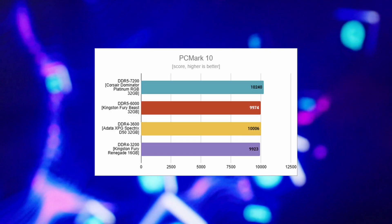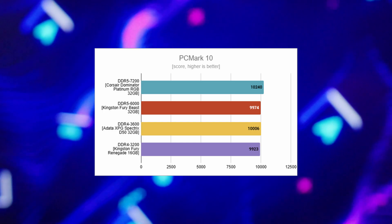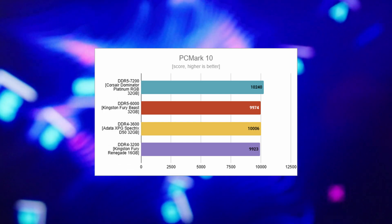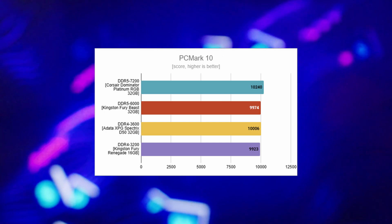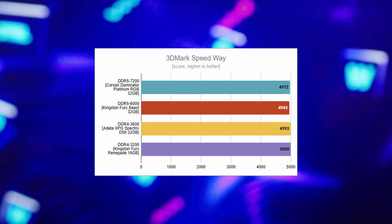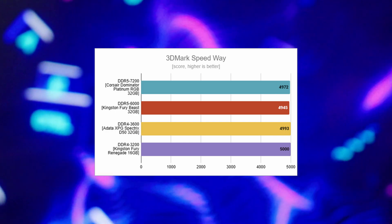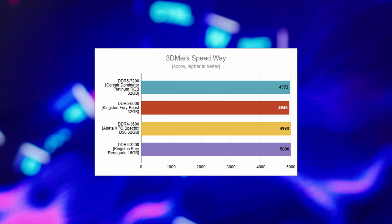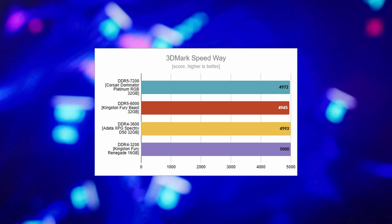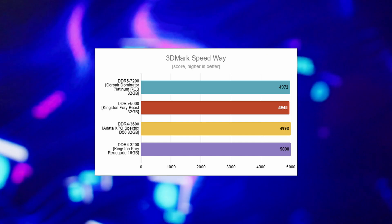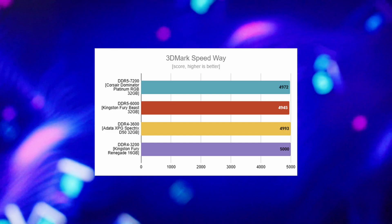I then checked overall computer performance with PC Mark 10 — web browsing, editing documents, video conferencing, and digital content creation — and the type of RAM had no meaningful consequence on performance. 3DMark's Speedway benchmark, which measures gaming performance with DirectX 12 Ultimate, showed that even in the latest and most demanding games, it doesn't really matter if you're using DDR5 or DDR4. The scores were pretty much the same and within the error margin.